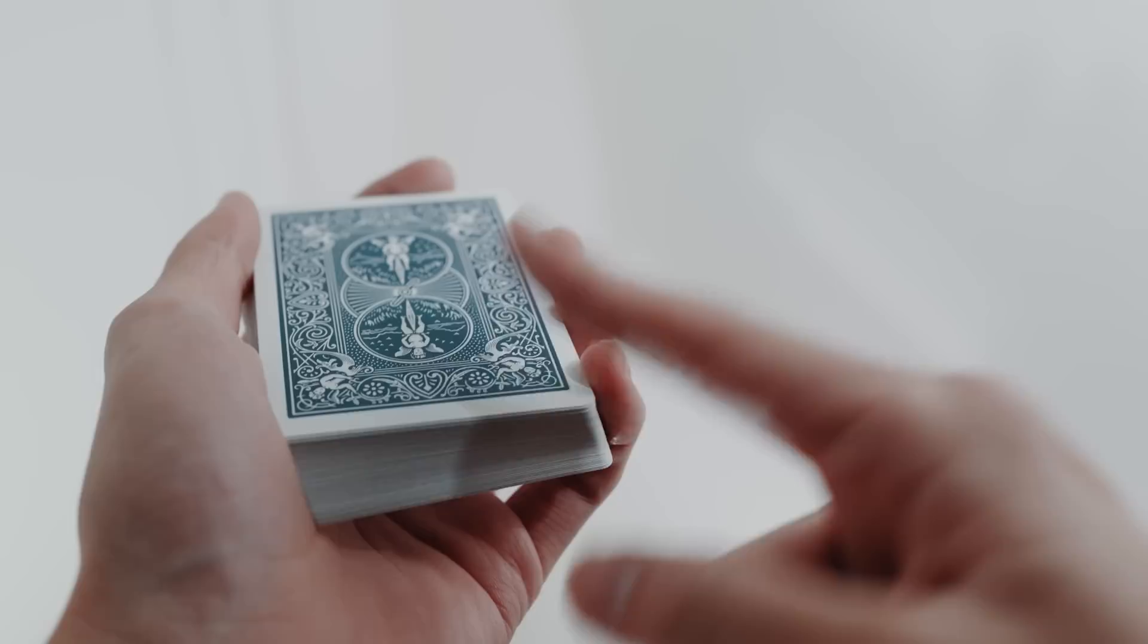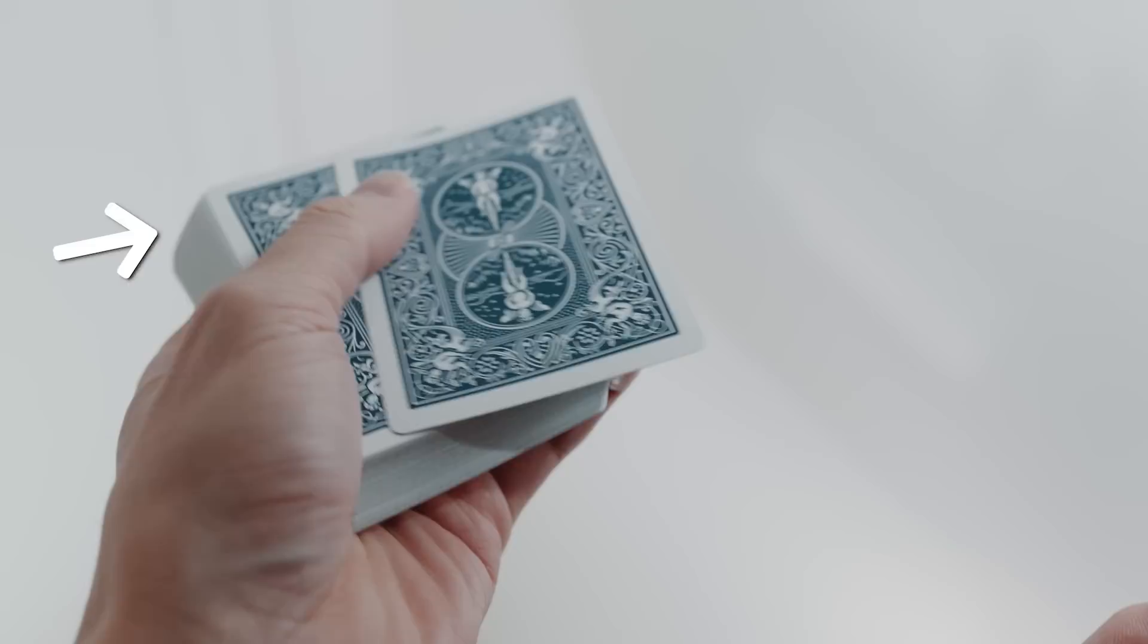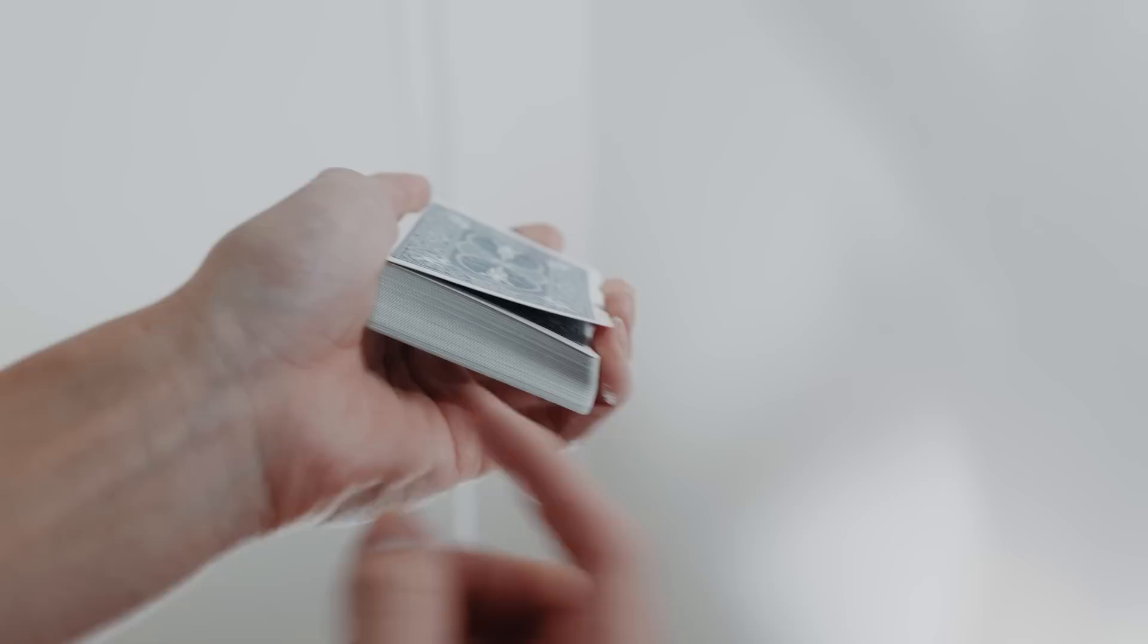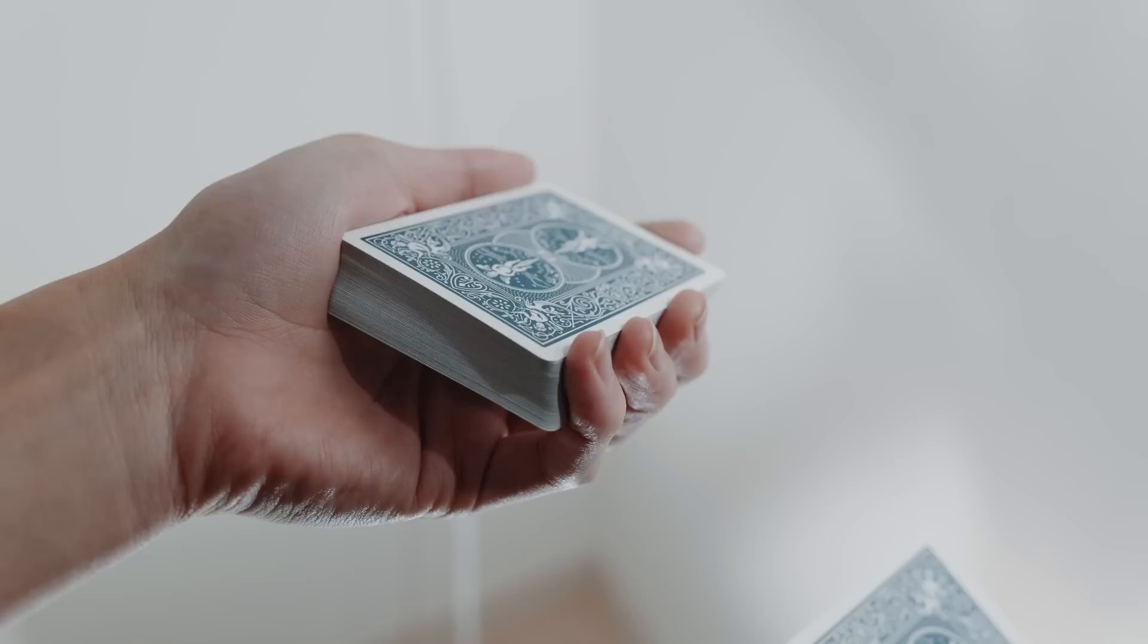So the first thing you need to do is get a pinky break under the top card. Hold the deck in mechanics grip and then use your thumb to slide the top card to the side so it's on your fingertips. As you realign the cards, slide your pinky finger under the top card. Importantly, you want to make sure that you don't flash the third card, which is face up.